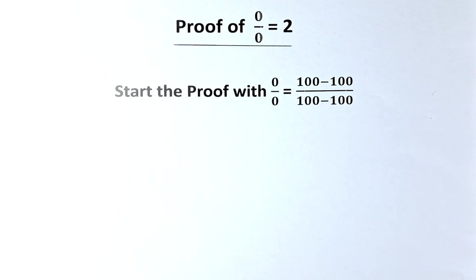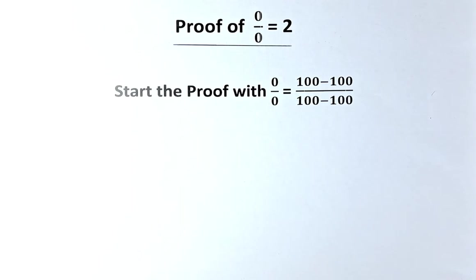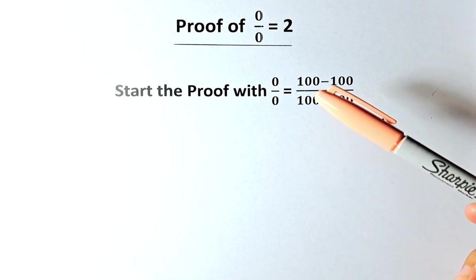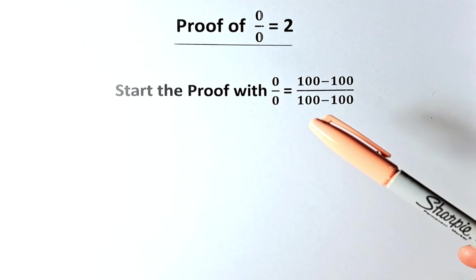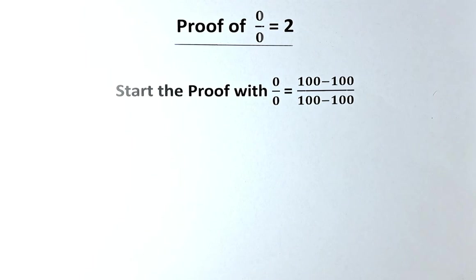So now, we're going to start the proof, the incorrect proof of 0 divided by 0 equal to 2, by stating that 0 divided by 0 is equal to 100 minus 100, because 100 minus 100 is 0, and the denominator is also 100 minus 100. So we're going to start with that.